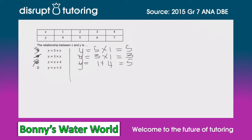So d must be the right answer. But let's just double check. y equals 1 plus 3, which equals 4. And there we go — y is 4 when x is 1, so d is definitely the right answer.